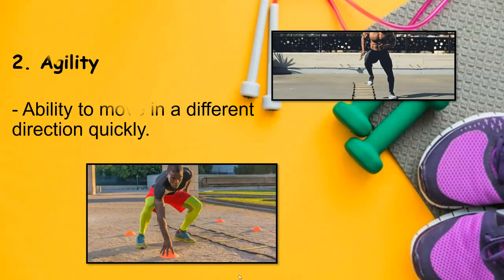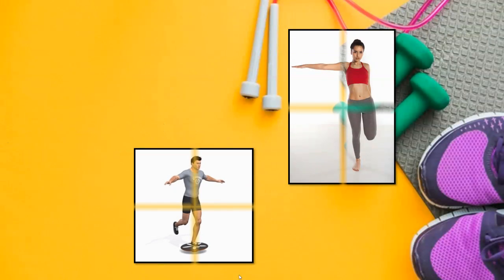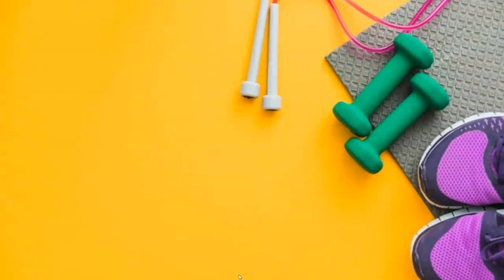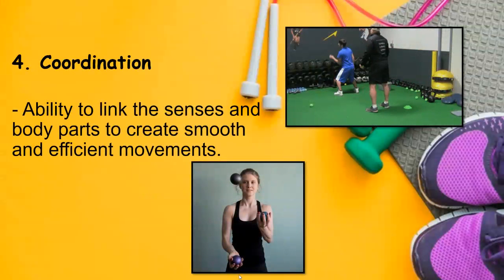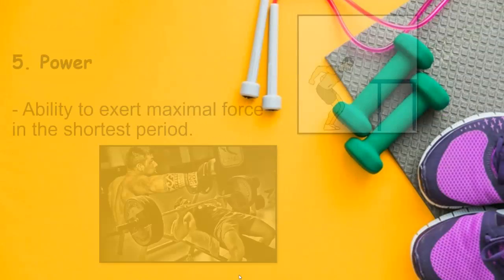The third one is balance — the ability to keep our body stable. Balance is critical in all areas of fitness and athletics; without balance, our body movements wouldn't flow and look smooth. The fourth one is coordination — it is the ability to move accurately and smoothly.